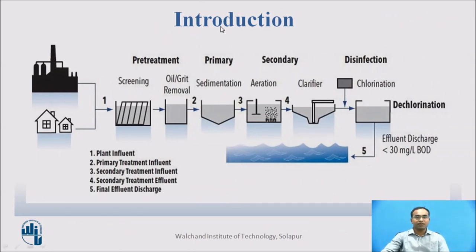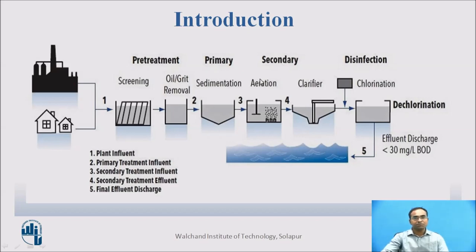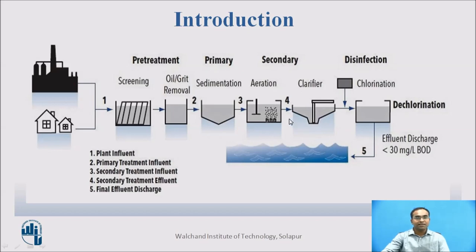We had completed the primary sedimentation tank in the flow sheet of wastewater treatment plant. Now we are going to study about the secondary treatment of wastewater. We have to focus on the carbonaceous and nitrogenous part of wastewater. In the secondary treatment plant, which involves aeration and clarification, we will remove all this carbonaceous matter or biological matter present in wastewater. The activated sludge process is basically a part of the secondary treatment plant.